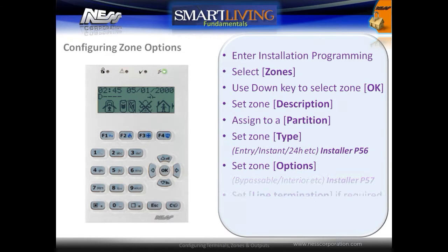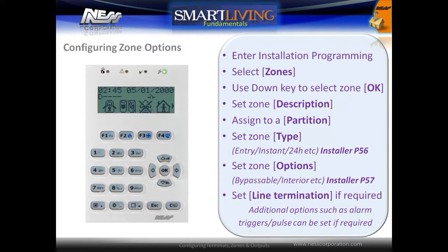To configure zone options, enter into installation programming and then scroll down and select Zones. Use the up and down keys to select a zone and press OK. Set the zone description, assign it to a partition, and set the zone type such as Entry, Instant, or 24 Hour. Set additional options for the zone such as if the zone can be bypassed or if it is an interior zone, and then set the line termination if required.